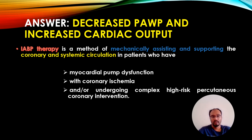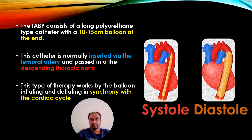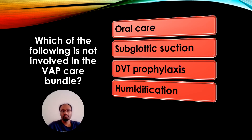IABP therapy is a method of mechanically assisting and supporting the coronary and systemic circulation in patients who have myocardial pump dysfunction with coronary ischemia and are undergoing complex high-risk percutaneous coronary intervention. The IABP consists of a long polyurethane catheter with a 10 to 15 centimeter balloon at the end, inserted via the femoral artery into the descending thoracic aorta. The balloon inflates during diastole to enhance coronary circulation.